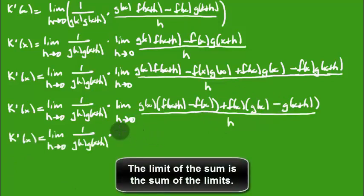So if I take this now, I take the limit as h approaches zero. So now I've got this part, g of x. I've got this f of x plus h minus f of x all over h.